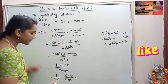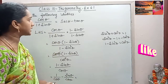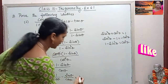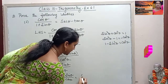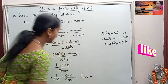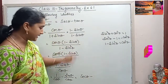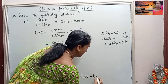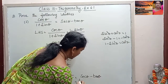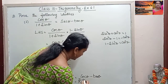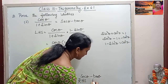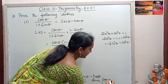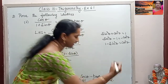Now, 1 by cos theta is secant theta, and sine theta by cos theta is tan theta. So we get secant theta minus tan theta, which is exactly what we were asked to prove in the RHS. Hence we have proved the identity.